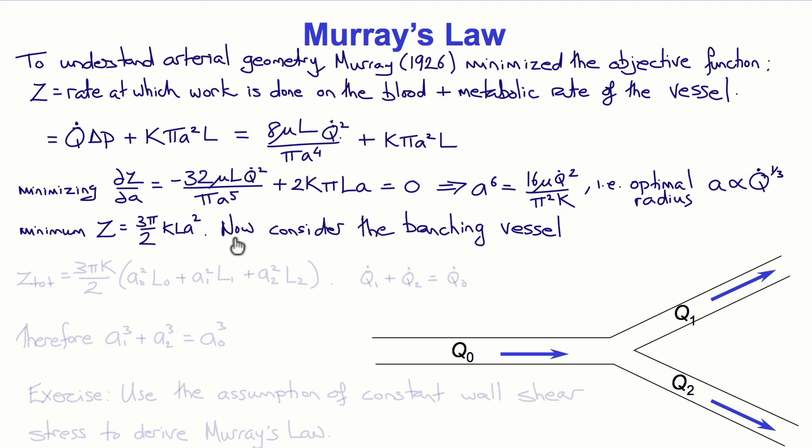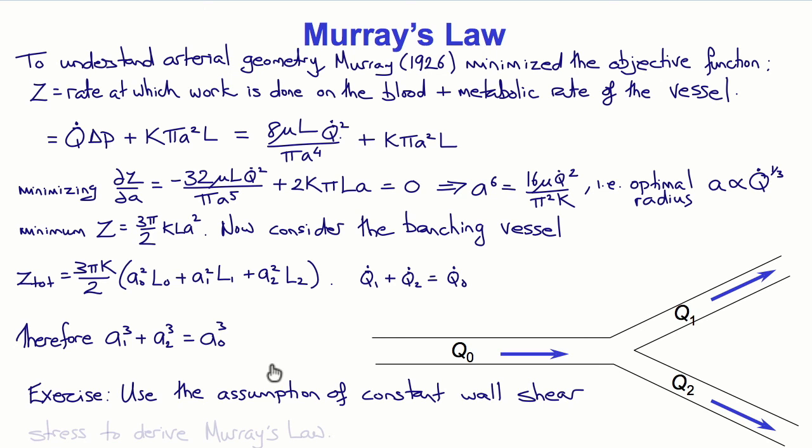We can now use this idea to analyze how vessels should branch optimally to preserve this optimal radius. If we consider this network here, then the total z would be 3 pi k over 2 times a0 squared l plus a1 squared l1 plus a2 squared l2. By the continuity equation q1 plus q2 will equal q0 because the total flow is constant, and that would therefore lead us to conclude that a1 cubed plus a2 cubed is equal to a0 cubed. In fact this is what experimental observations have seen, that the ratio of the diameters follows this relationship.